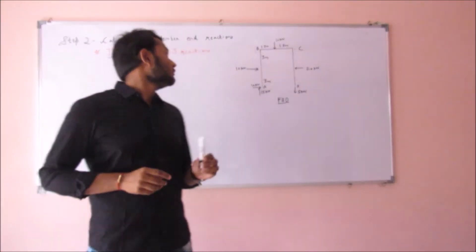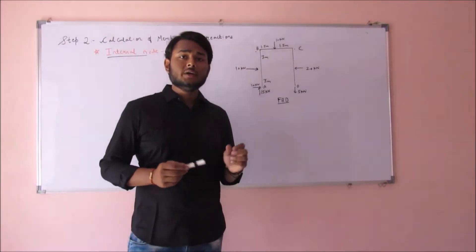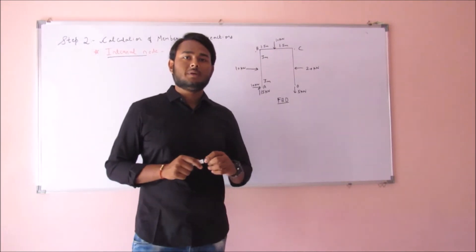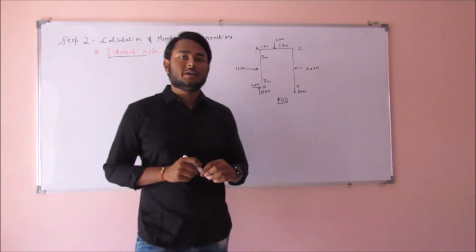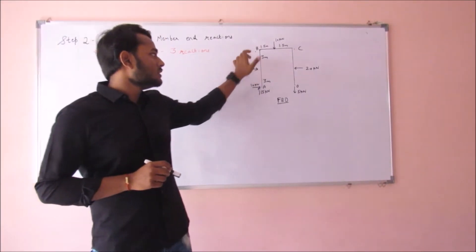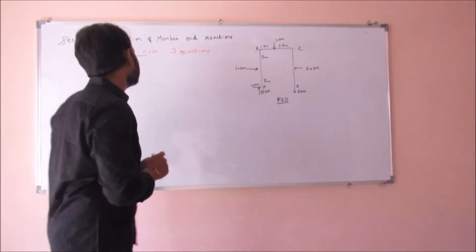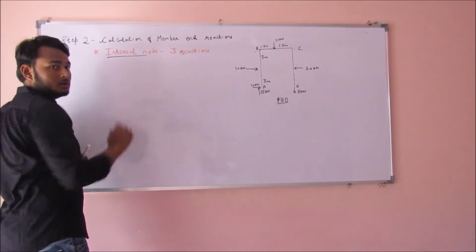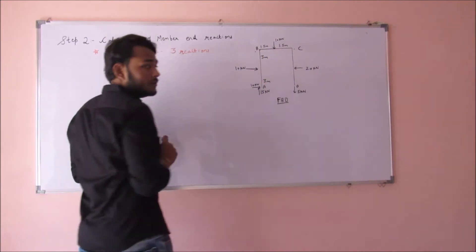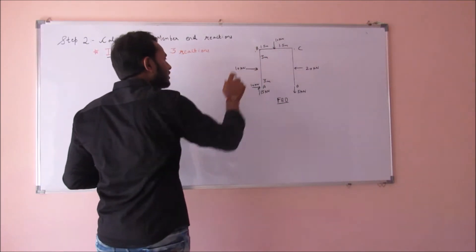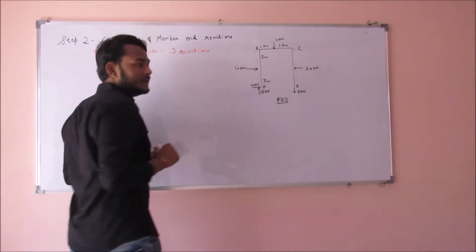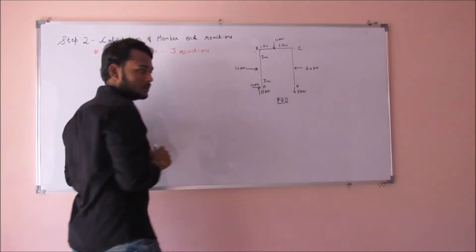Moving on to step 2, which is calculation of member end reactions. Knowing that the entire portal frame is in equilibrium, each member of the portal frame will be in equilibrium separately. So member end reactions can be calculated by applying the conditions of equilibrium to the free body diagram of each member separately. For this, we just need to remember one basic rule: whenever we encounter an internal joint, we have to give three reactions there — one in the horizontal direction, one in the vertical direction, and one moment. In our case, only two internal joints B and C are present.